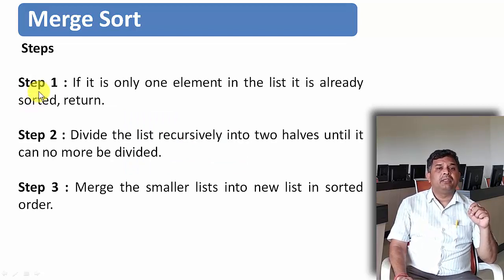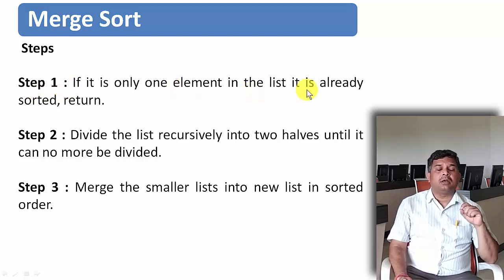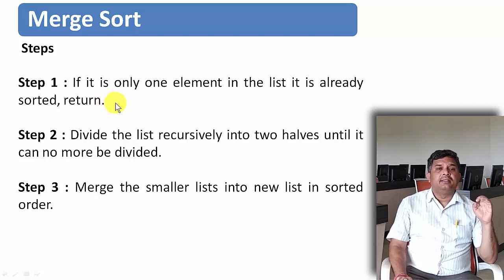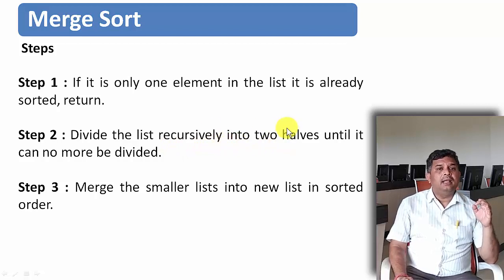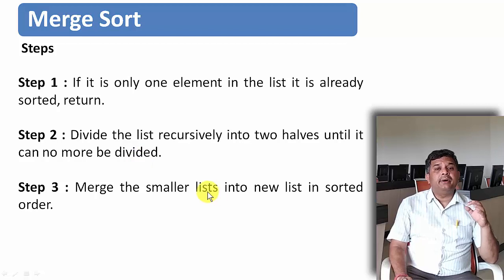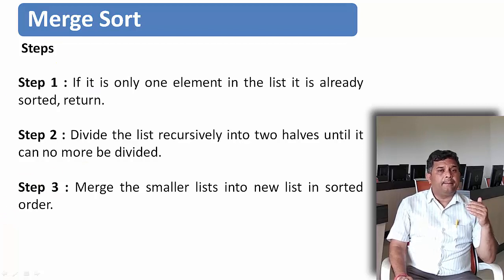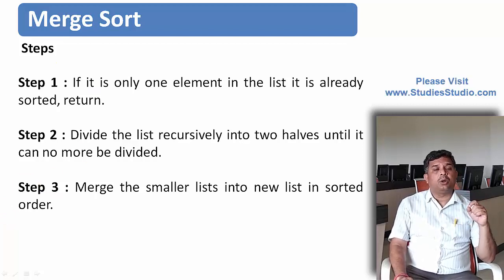The steps we are going to follow for merge sort are: first, if there is only one element in the list then it is already sorted — one element is always sorted. Second, divide the list recursively into two halves until it can no more be divided. Third, merge the smaller lists into a new list in sorted order. These are the three steps we apply for merge sort.